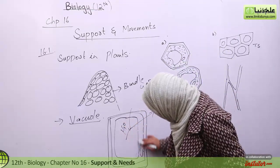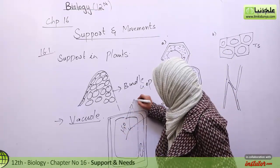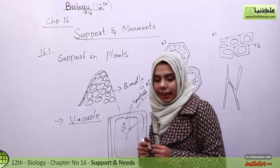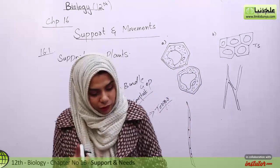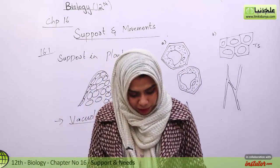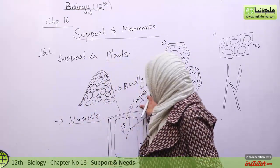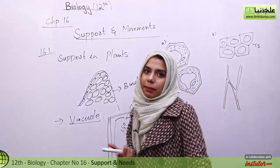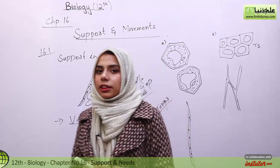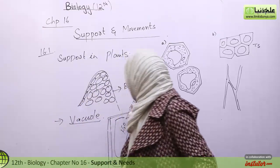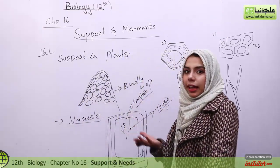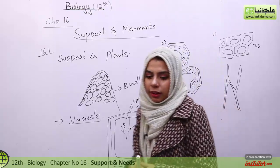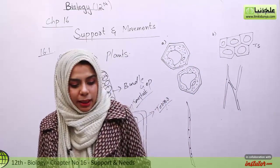The membrane of the vacuole is known as the tonoplast. What is tonoplast? It is the membrane of the vacuole. This membrane balances the concentration of ions within the vacuole — it increases the ion concentration within the vacuole. Due to this, osmosis of water occurs into the vacuole and turgor is provided.